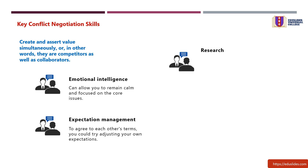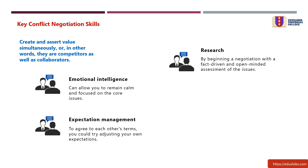Skill three: research. Performing research can help support your claims and start a foundation for your negotiation. By beginning a negotiation with a fact-driven and open-minded assessment of the issues and sharing useful insights, you and the other party may better understand how the conflict originated and how to solve it.